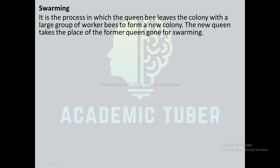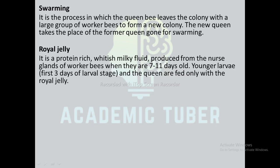Swarming is the process in which the queen bee leaves the colony with a large group of worker bees to form a new colony. The new queen takes the place of the former queen who left for swarming. Royal jelly is a protein-rich, whitish milky fluid produced from the nurse glands of worker bees when they are 7 to 11 days old. Younger larvae and the queen are fed only with royal jelly.